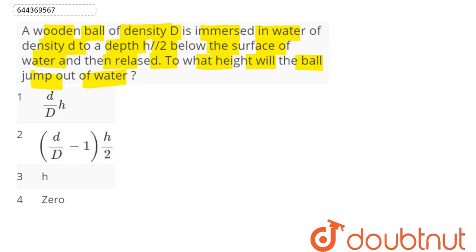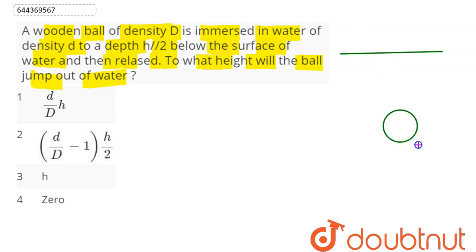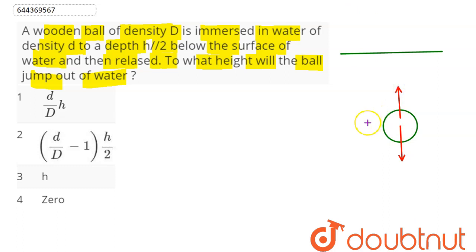Here we can see this is the surface of water. There is a wooden ball, let's say spherical in shape. The forces acting on it are weight acting downwards, and next we can see the buoyancy force acting upwards.